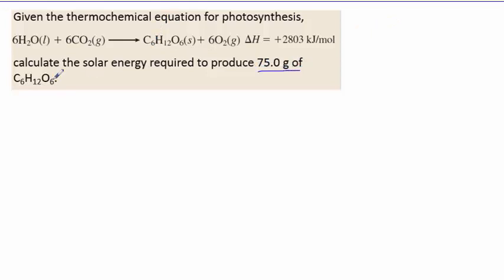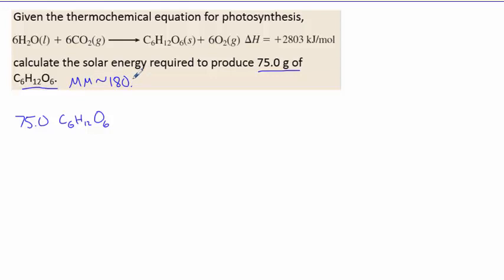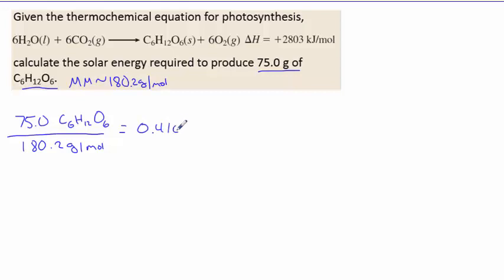Using the same three steps of stoichiometry: first, convert 75 grams of glucose to moles. To get the molar mass of glucose, add up six carbons, twelve hydrogens, and six oxygens — you should get approximately 180.2 grams per mole. Dividing 75 by 180.2, you get 0.416 moles of glucose.